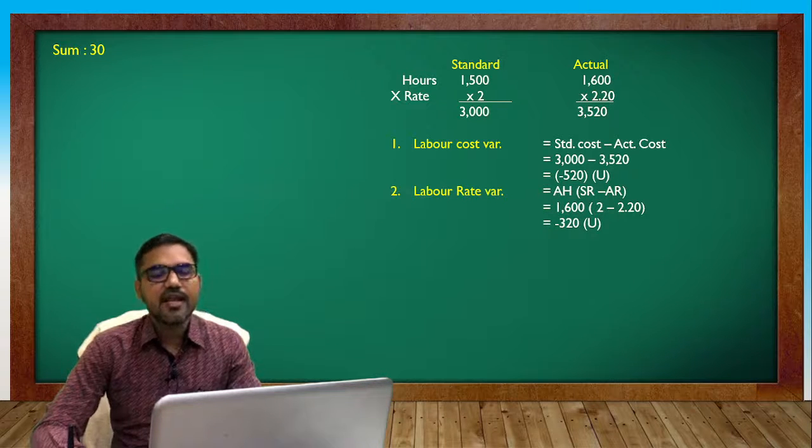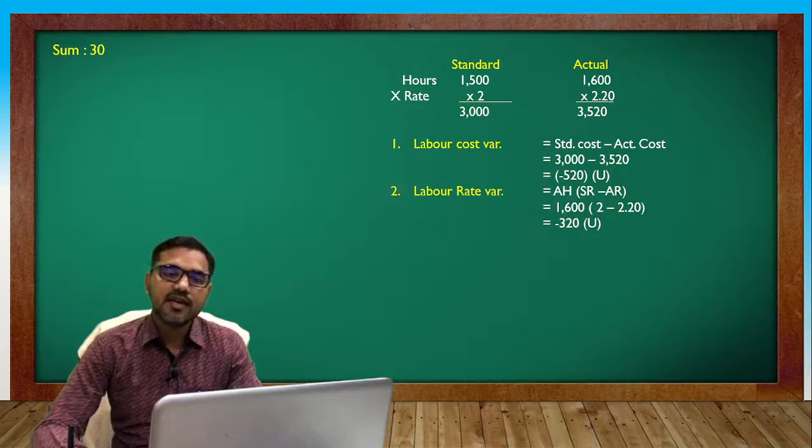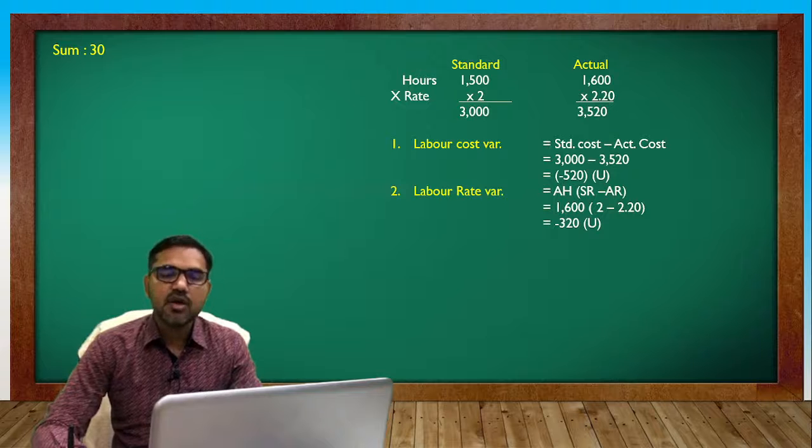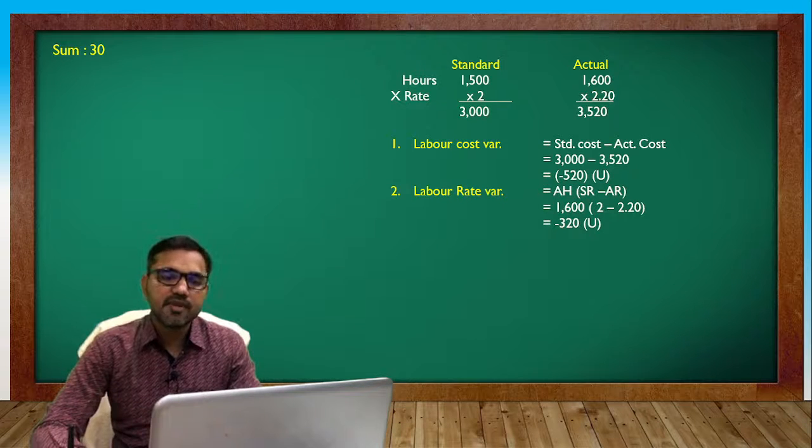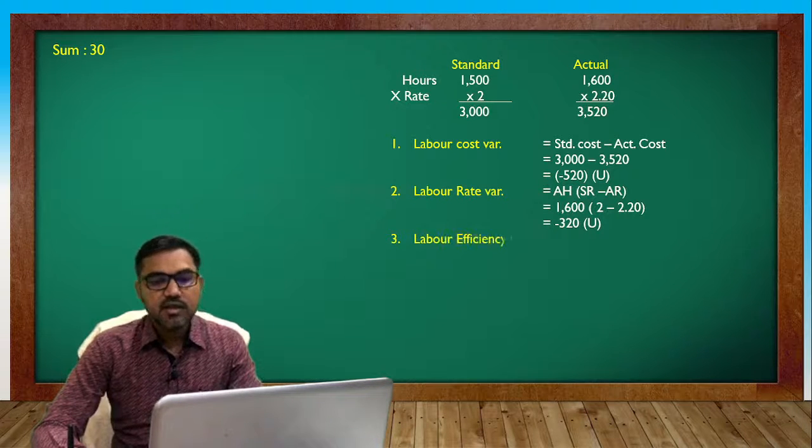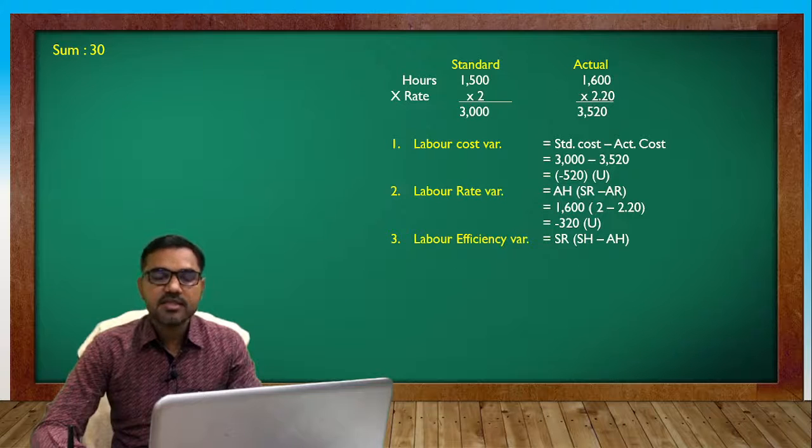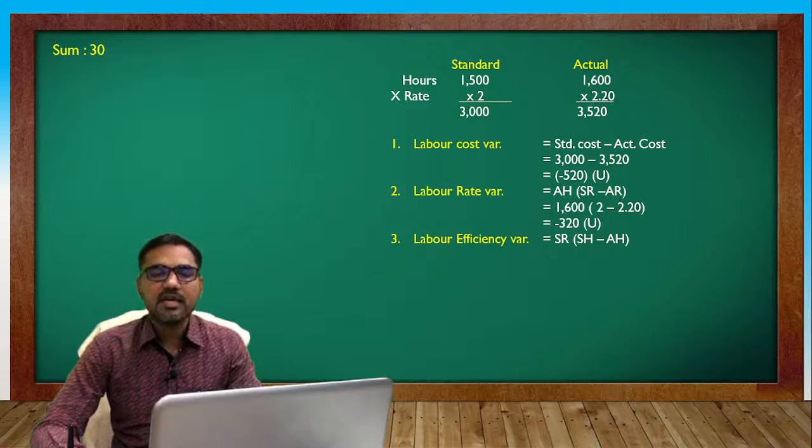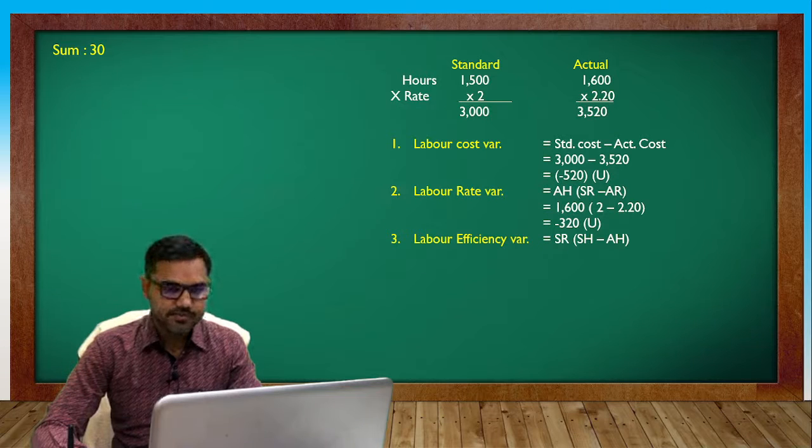1600 actual hours, 2 standard rate and 2.20 actual rate - that's the rate difference. Then actual hours multiplied by the rate variance. 0.20 gives the variance. Standard rate H, SH minus AH for efficiency.